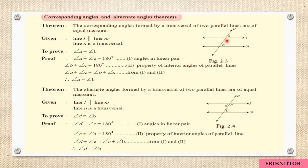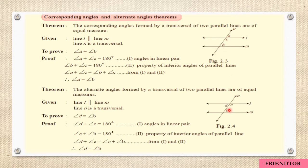If it looks like two floors it is corresponding angles, and if both angles are on one side and inside, it is interior angles. The properties are: when you have two parallel lines and one transversal, interior angles are supplementary — their sum is 180°, so B plus C equals 180°. Second, corresponding angles are equal: angle A equals angle B. Third, alternate angles are congruent: angle D equals angle B.